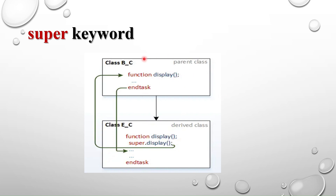Here we will see an example. This is my base class with a display method, and this is my derived class which also has a display method with the same name. If I call the display method using the child handle, I will get the child class method — not the parent class method — because the child class overrides the parent class method.